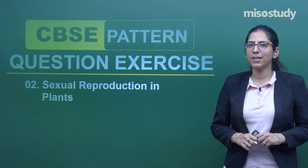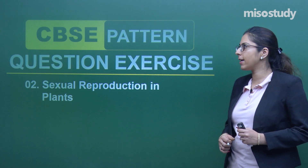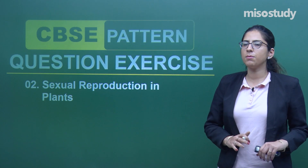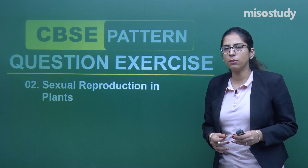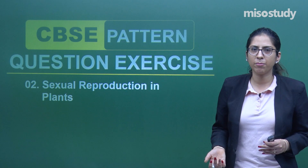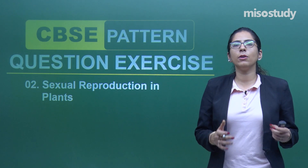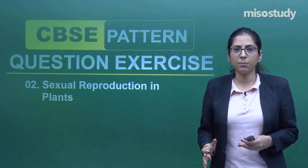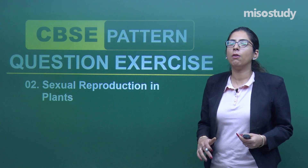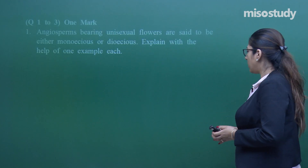Hello students, welcome to Meso Study again. In today's session we will be discussing certain CVSC pattern questions as an exercise from the chapter 'Sexual Reproduction in Plants'. We have discussed the whole chapter, now it's time to revise certain questions. I have divided the questions into different categories: some one mark, some two marks, some three marks, and five marks. I'll tell you general strategies on how to proceed — you can refer to earlier sessions for complete explanations.